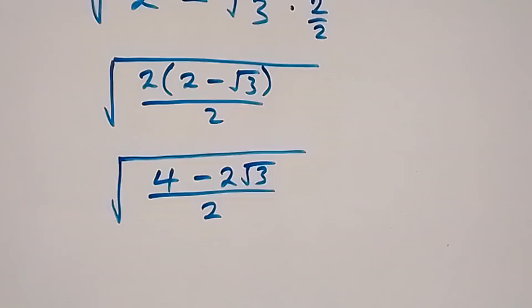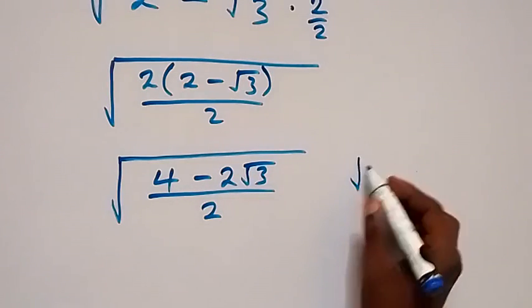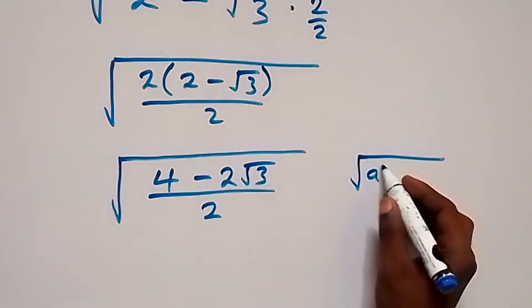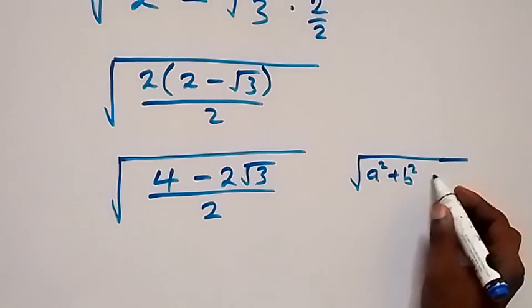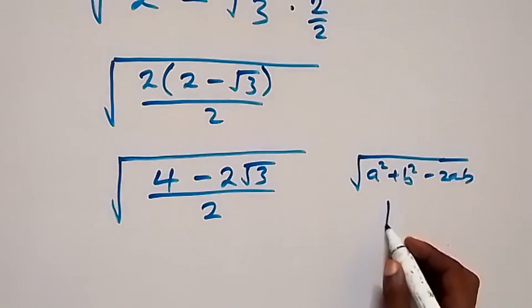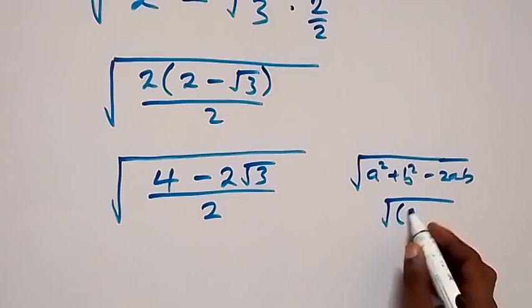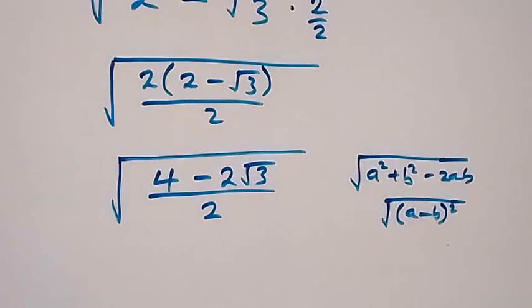Square root of a square plus b square minus 2ab, which will then be given minus square root of a minus b then r square. So we are intending to write this.